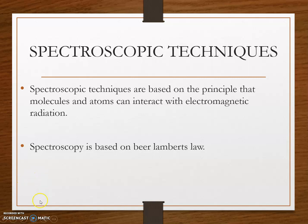Spectroscopic techniques are based on the principle that molecules and atoms can interact with electromagnetic radiation. Spectroscopy is the study of the interaction between matter and electromagnetic radiation. The main principle behind spectroscopy is Beer-Lambert's law, which states that absorption is directly proportional to the concentration and also directly proportional to the path length.